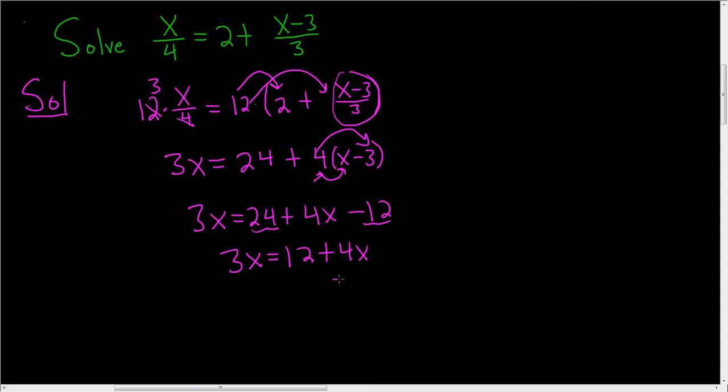Almost done. Let's subtract 4x from both sides. That way we have all of the x terms on one side. So negative x equals 12.